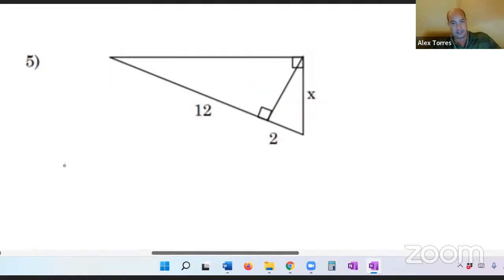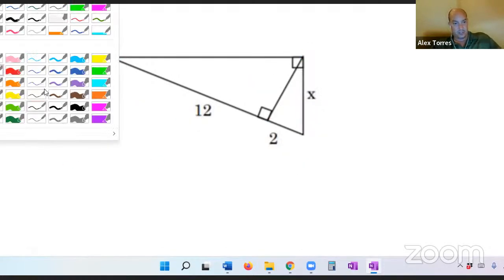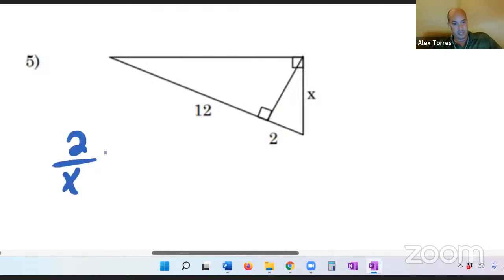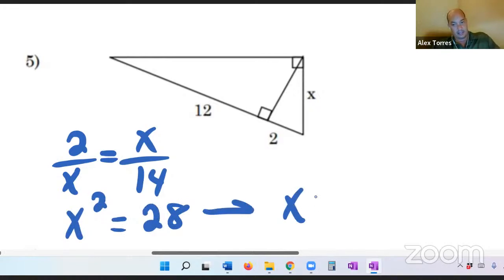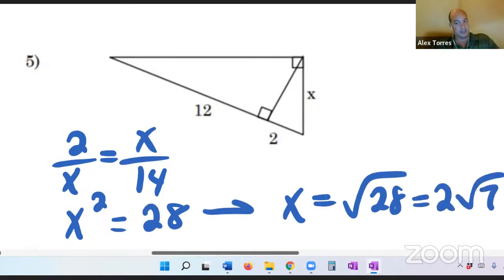And let's go ahead and write that out. So we've got 2 over x equals x over 14, which is the 12 plus 2. Cross multiply that. You've got x times x, x squared, equals 2 times 14, which is 28. Square root of both sides. And you get x equals the square root of 28, which in radical form would be 2 root 7. If you don't know how to do that, that's subject for another video. But definitely something you want to be able to do, simplify something in radical form.